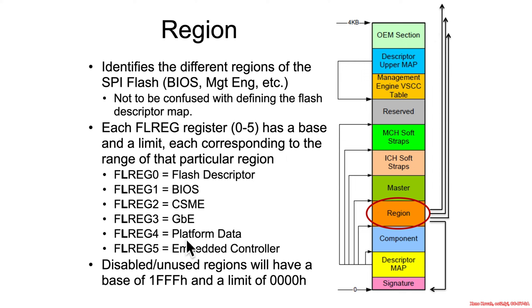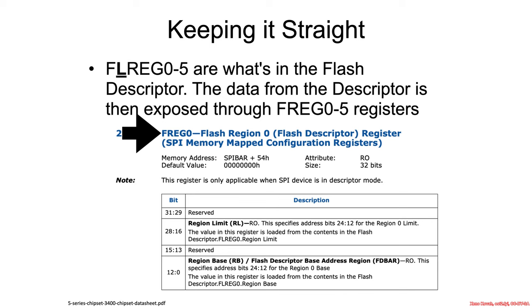For newer hardware, even though they may support things like the platform data region or the embedded controller region, if they're not actually using it on that particular system, the expectation is that these registers will be filled in with a base address of 0x1FFF and a limit of 0. That basically tells the PCH this is not actually used on this system. It's FL reg 0 through 5 on the flash descriptor and F reg 0 through 5 as the memory-mapped copy found in the SPI bar.